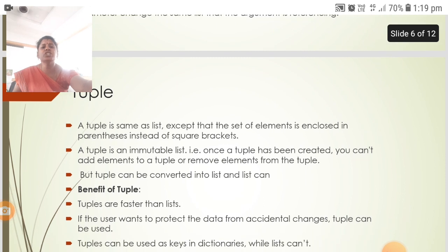Next is tuples. A tuple is the same as a list except the set of elements is enclosed in parentheses instead of square brackets. A tuple is an immutable list. Once a tuple has been created, you can't add or remove elements. But tuple can be converted into list and list can be converted into tuple.